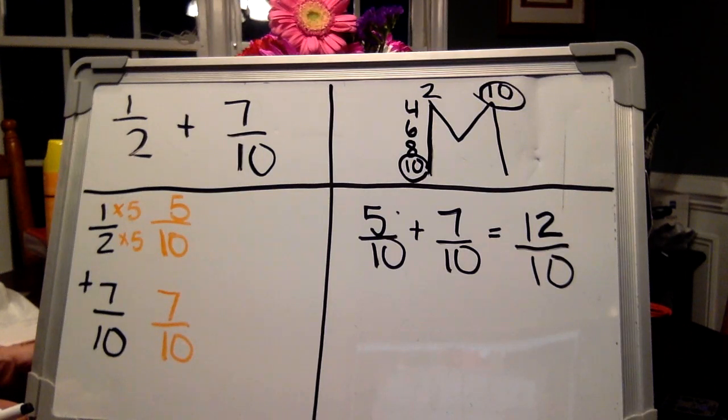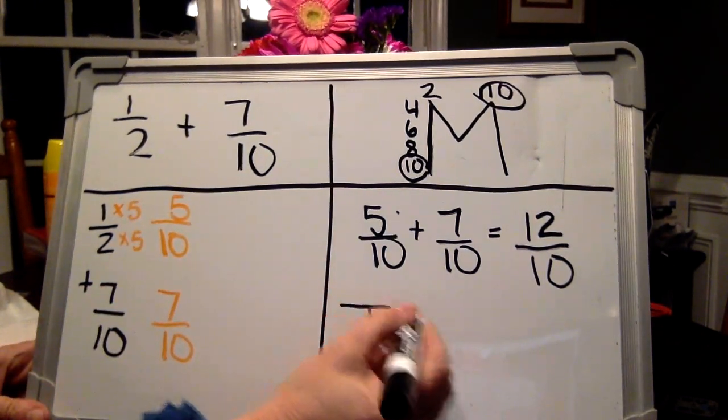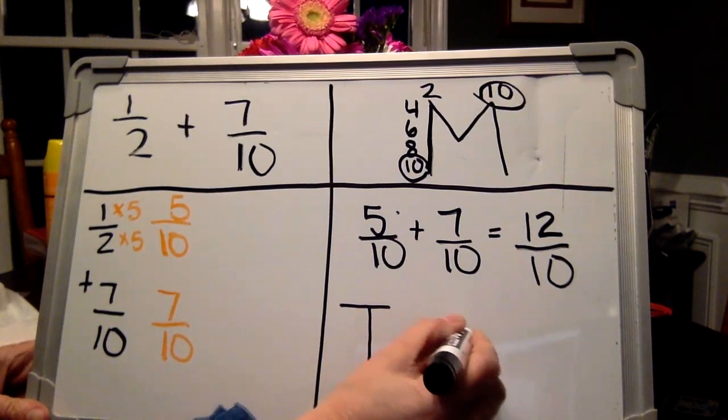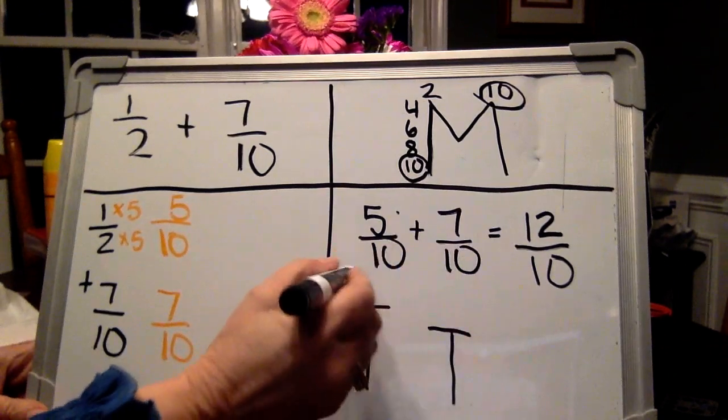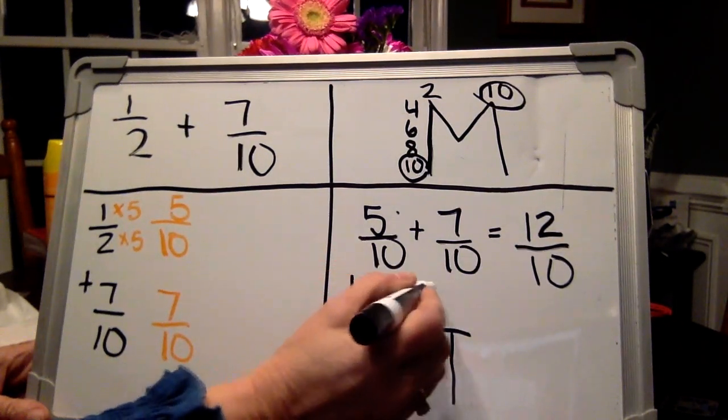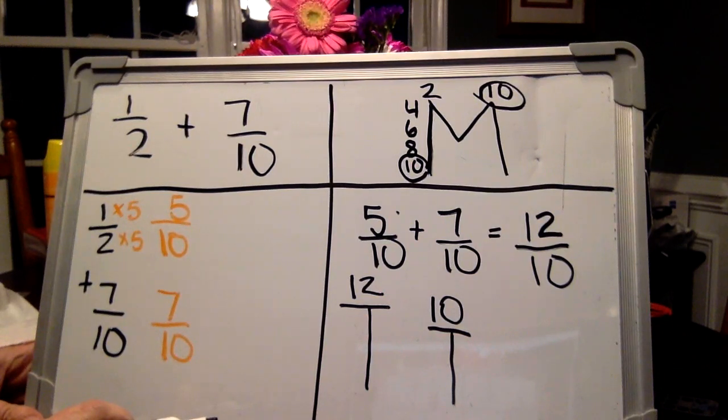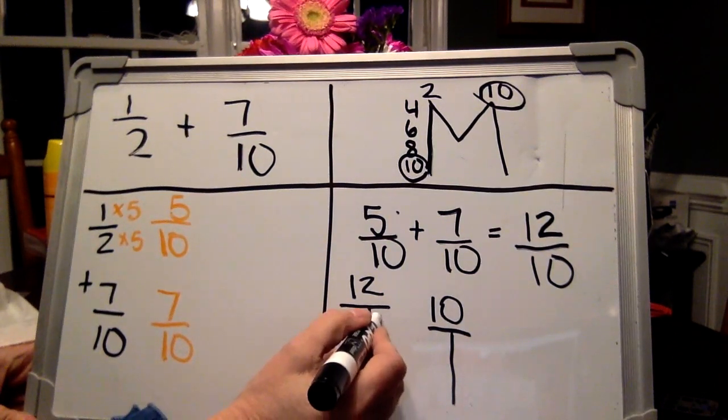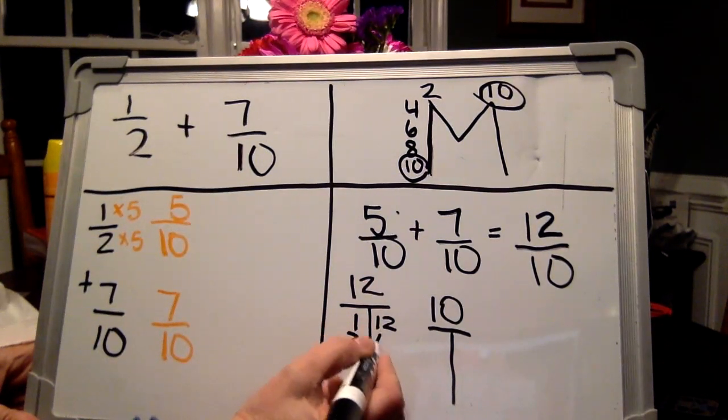When we simplify, we have to use our factors. Here, the f in simplify and the f in factors. That means we need t-charts. We're going to make t-charts for the twelve and the ten in order to simplify. Remember to start with your best friend. Two and six.